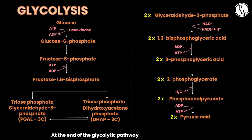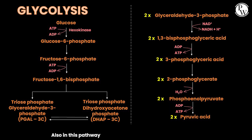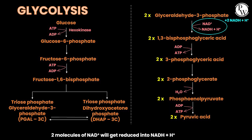At the end of the glycolytic pathway, there will be a net gain of two ATP molecules. Also in this pathway, two molecules of NAD+ will get reduced into NADH + H+.